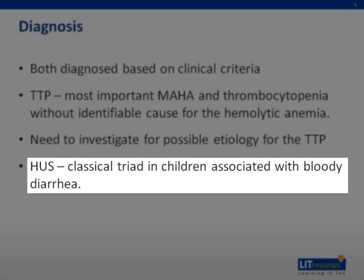HUS usually presents with the classical triad. However, certain patients may have more extensive multi-organ disease, such as anterior colitis, neurological complications, liver dysfunction, pancreatic and cardiac problems. In this rare situation, differentiation between TTP and HUS is difficult.